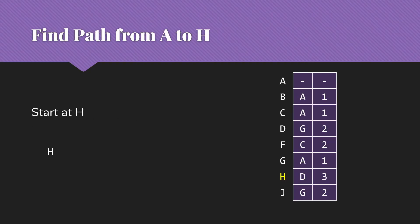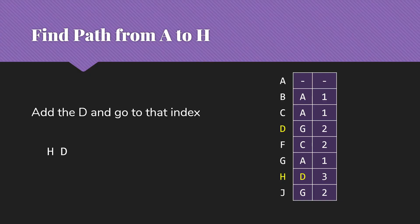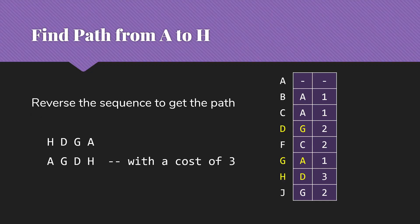Suppose we want to find the path from A to H. We start at H, then add D because D is what was stored at that spot in the array, and we go to the index for D. That gives us G, and we go to the index for G, which gives us A — our source. So now we have the path backwards. We simply reverse that sequence to get A, G, D, H with a cost of 3. Since this is unweighted, we can figure that out from the number of edges, or just look at the cost part of our arrays.